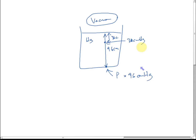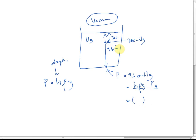To convert from cm Hg to Pascals, we use the pressure of liquid formula P = h·ρ·g, where h is the depth of the liquid. The depth here is 96 cm, which we convert to 0.96 m. So h = 0.96 m, ρ = 13,600 kg/m³, and g = 10 m/s². This gives the gas pressure in Pascals, because 96 cm Hg means a pressure equal to that 96 cm below the surface of mercury.